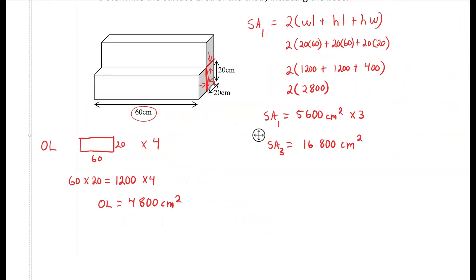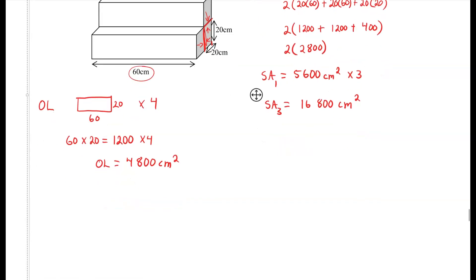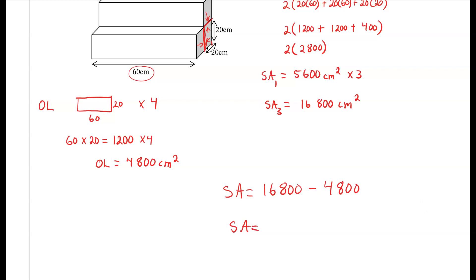The last thing we need to do is take our total surface area and subtract our overlap to get our actual surface area. Surface area equals 16,800 subtract 4,800, so our surface area equals 12,000 centimeters squared. If you want to make your answer easy to find, always box your final answer.